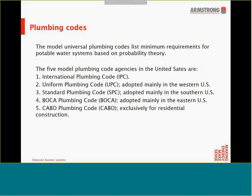When designing boosters, there's also a need to take into account any additional codes applicable in the region. The Model Plumbing Code lists minimum requirements for potable water systems based on probability theory. There are five model plumbing codes in the United States: the International Plumbing Code (IPC), the most widely adopted; the Uniform Plumbing Code (UPC), adopted mainly in Western US; the Standard Plumbing Code (SPC), adopted mainly in Southern US; and the CABO Plumbing Code, used exclusively for residential construction.